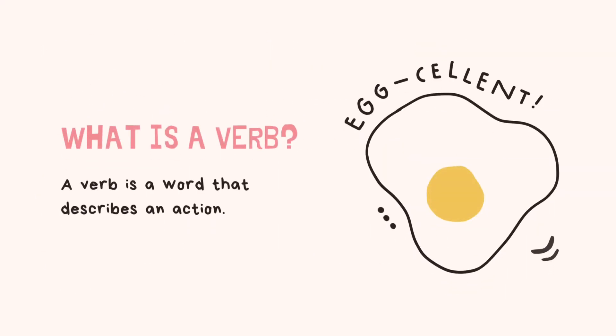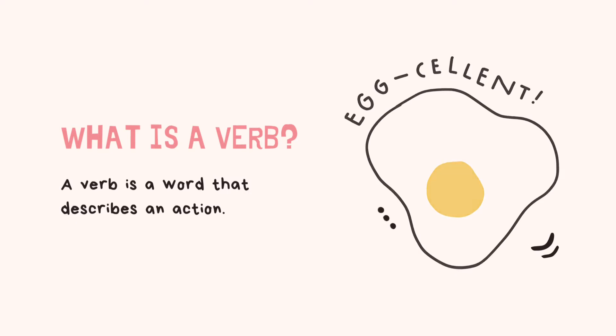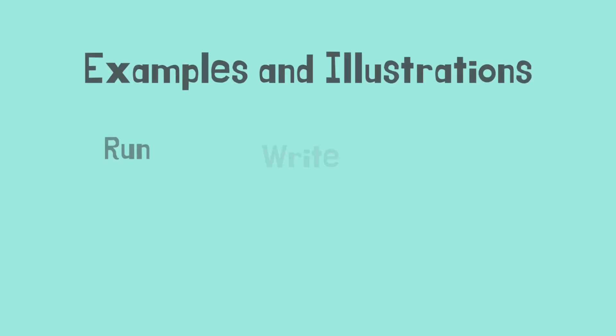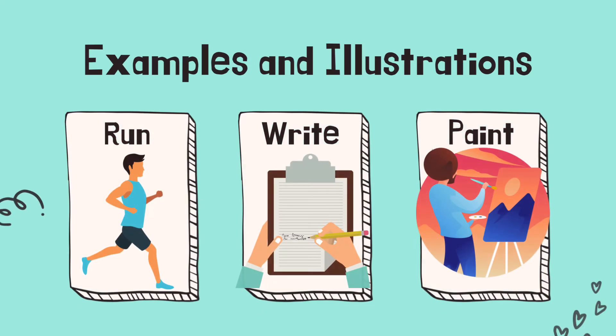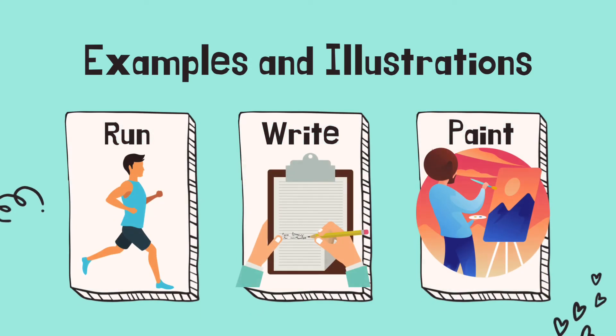What is a verb? A verb is a word that describes an action. Let's look at some examples and illustrations: run, write, and paint.